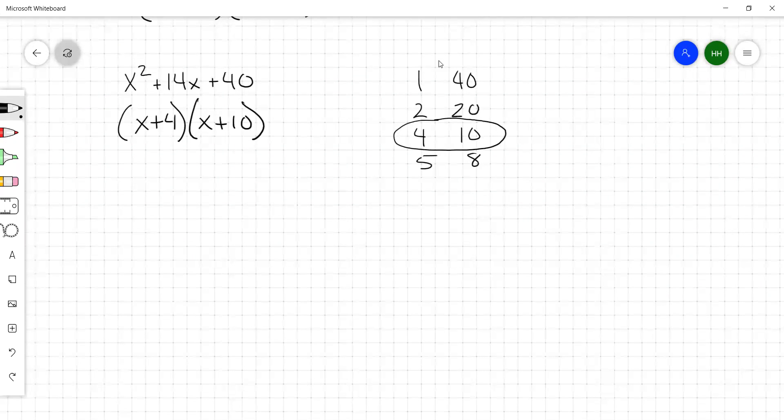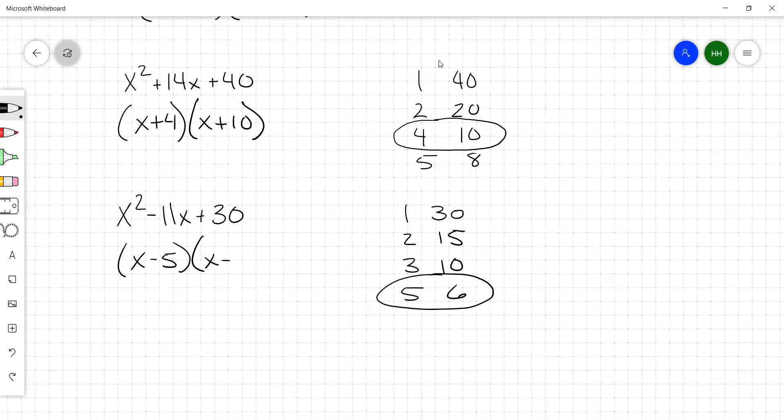Try x squared minus 11x plus 30. Some of you that are real good with multiplication already, you won't have to list the factors. You will look at the 30, you'll know the factors of 30 in your head, and you'll be able to adjust the signs so that they combine to negative 11. Because you've got 1 and 30, you've got 2 and 15, 3 and 10, then you've got 5 and 6. There you go. The 5 and 6 give you the 11. All right, but you've got to multiply to a positive 30 and add to a negative 11, so they've both got to be negative. x minus 5 times x minus 6.